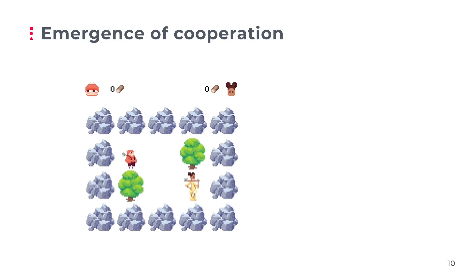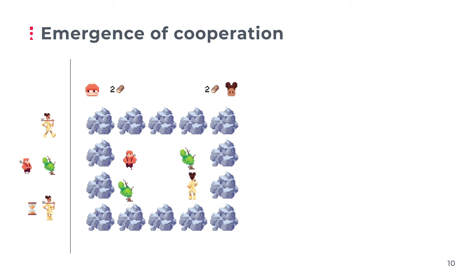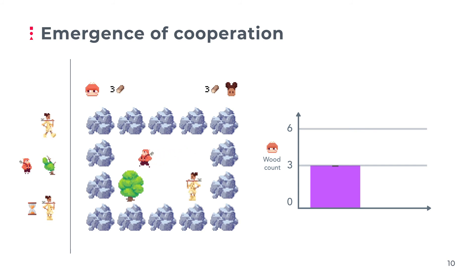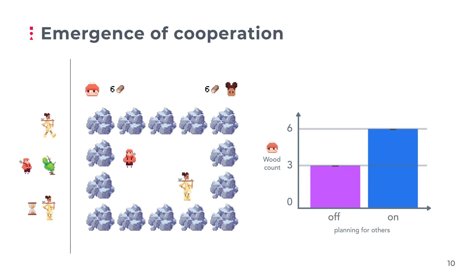In this next experiment, we investigate the emergence of cooperation. We only allow the base actions — walking, chopping, and waiting. However, we introduce a new effect: if one agent is chopping a tree and the other agent is also adjacent to that tree, both will receive a wood log. In the first run, agents only consider themselves while planning; both will chop down the tree closest to them, giving both three logs. In the second run, agents consider each other while planning, and cooperation emerges. Both agents will first chop one tree, then walk over to the other tree and chop the second one together. Keep in mind, there is no communication or coordination going on between the two agents. We have not taught the agents the concept of cooperation, nor do the agents share any common state beyond the world state. And yet this cooperative behavior arises purely from the agents' ability to plan for each other.